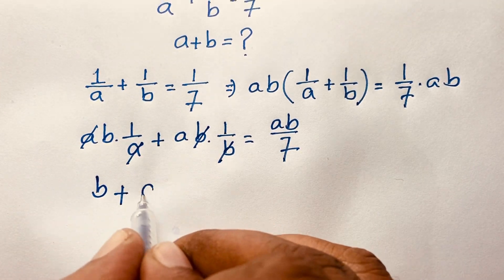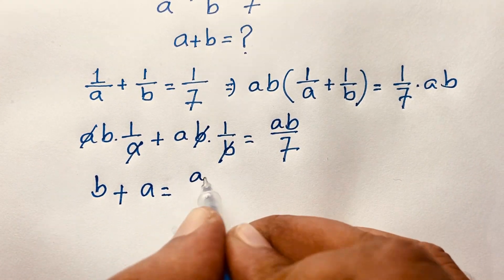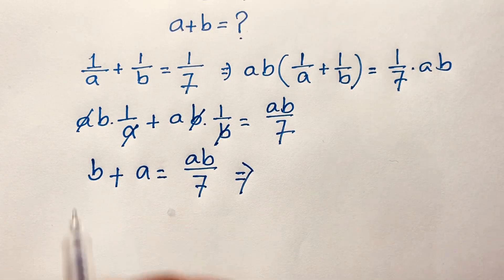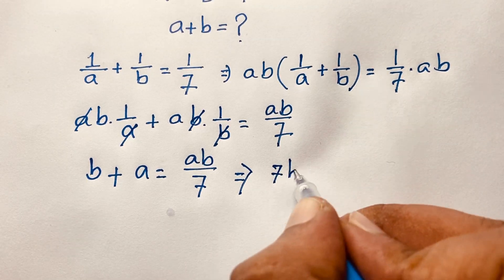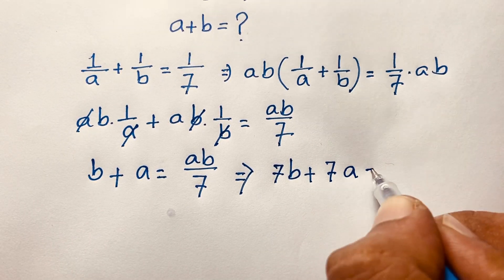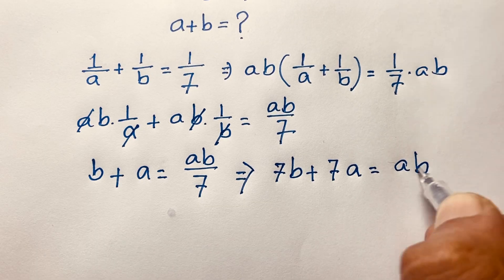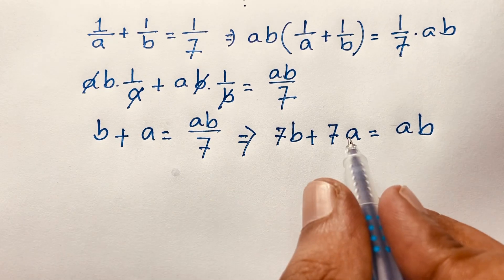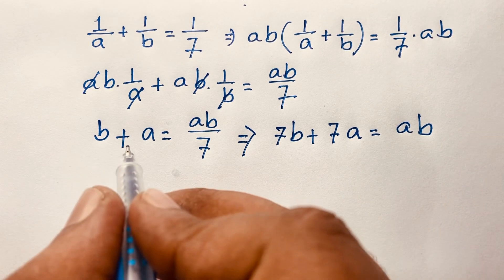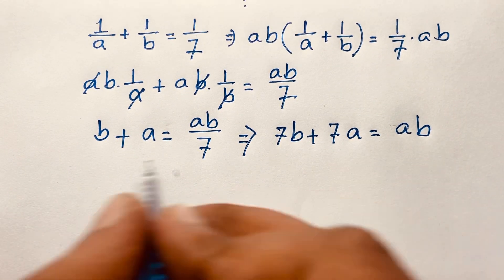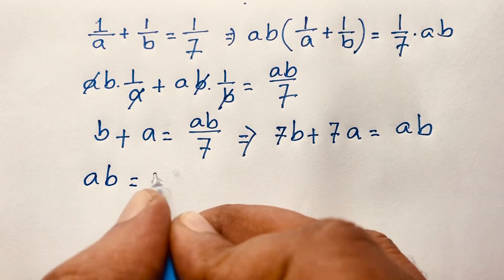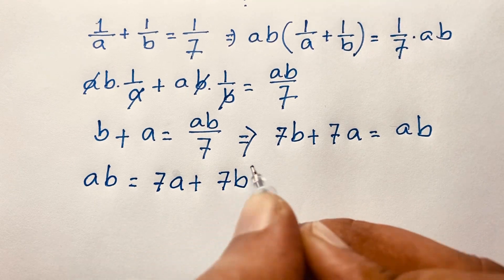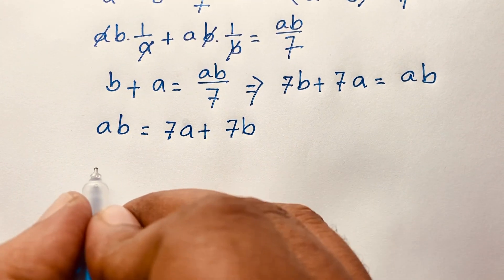So b plus a is equal to ab over 7. Multiplying both sides by 7: 7b plus 7a is equal to ab. Rearranging, ab is equal to 7a plus 7b.